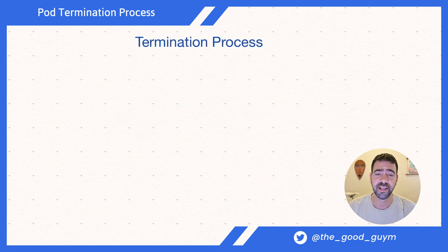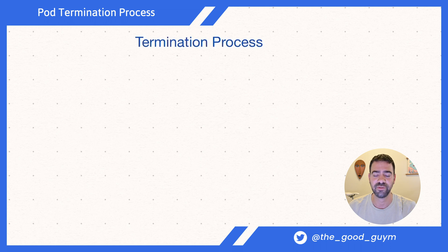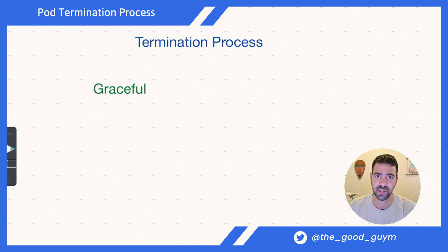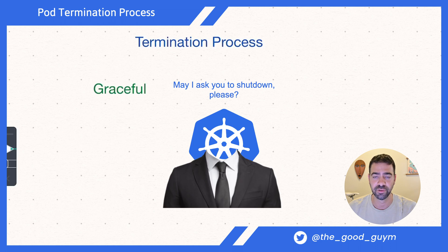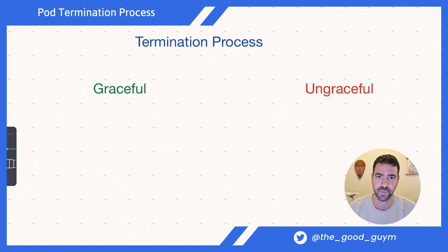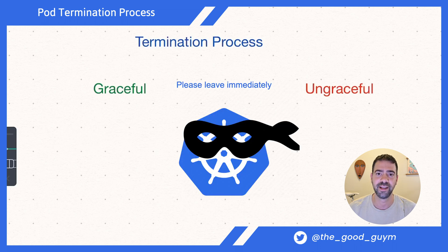After we find out what can trigger pod termination and how common it is, let's deep dive into the process itself. The termination process actually has two types. The graceful termination, when Kubernetes lets the application or the pod shut down itself — like when you click shutdown on your computer and wait for it to shut down gracefully. The other type is the ungraceful shutdown, a brutal shutdown when Kubernetes terminates the pod immediately, like holding the power button.